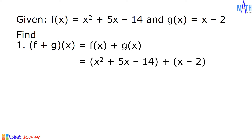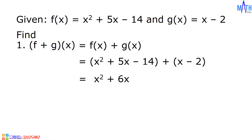Let us combine similar terms. We have x squared, and 5x plus x is equal to positive 6x, and negative 14 plus negative 2 is equal to negative 16. And this is the sum: x squared plus 6x minus 16.